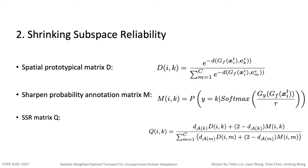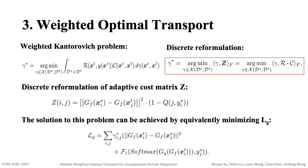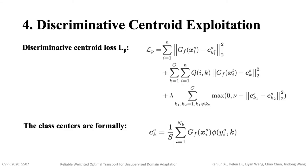Shrinking subspace reliability Q combines spatial prototypical matrix D and pseudo-classification probability M. SSR-weighted optimal transport Z seeks an optimal pairing matrix gamma between DS and DT. Discriminative centroid loss LP is inspired by the center loss.